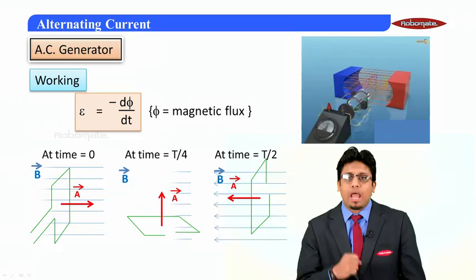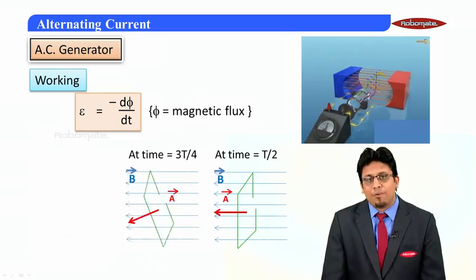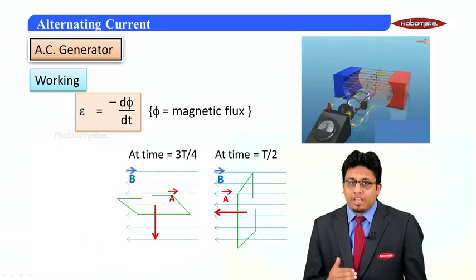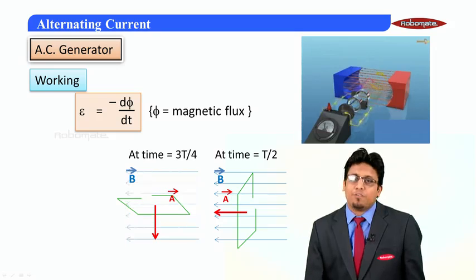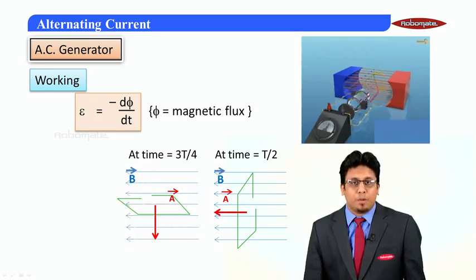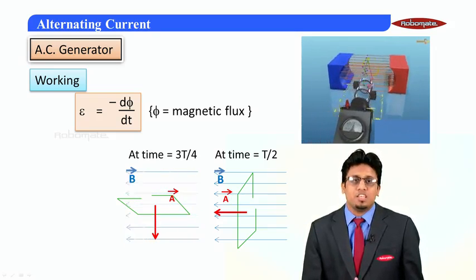Let's discuss what happens after the time instant T/2. On further rotation of 90 degrees, the coil is placed as shown in the figure. Again, the area vector is perpendicular to the magnetic field, and therefore the flux is zero again.